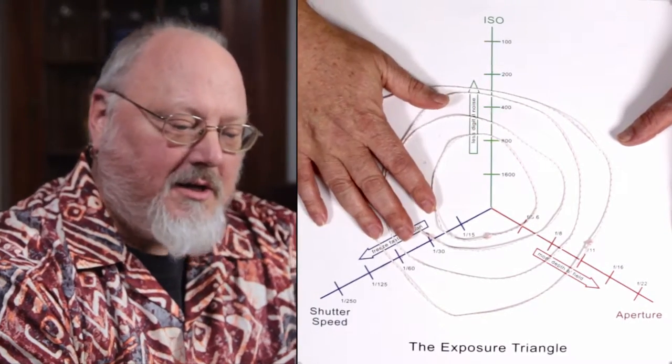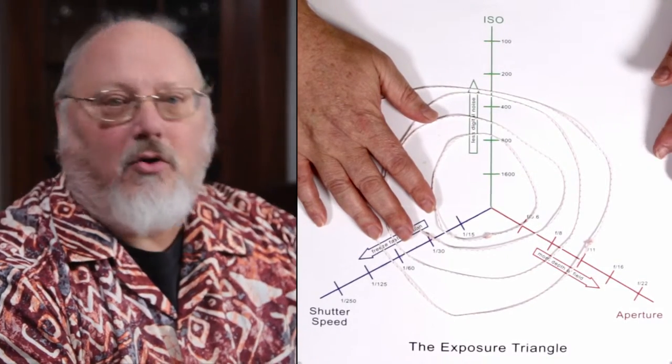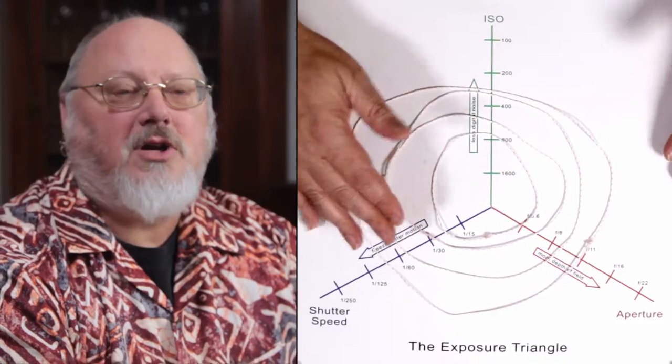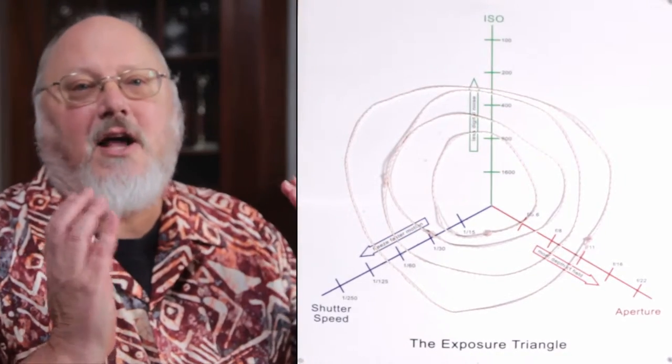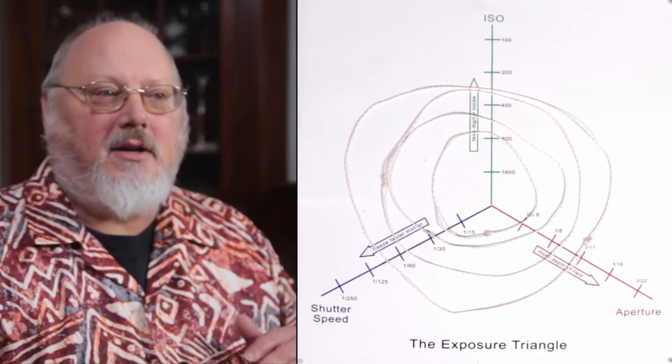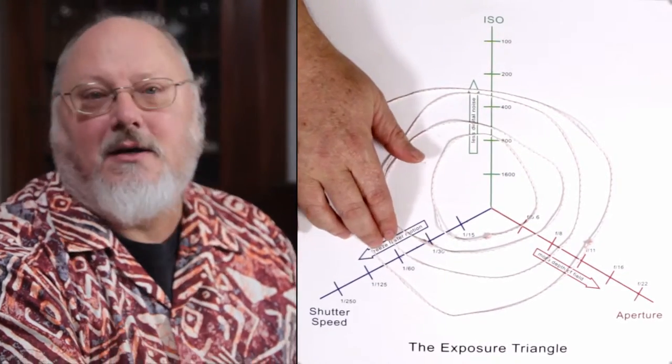So the next control is the shutter speed. The shutter speed is how long the shutter is open. The shutter is closed, and then when you press the shutter button, it opens the shutter, which allows light to come into the sensor. And how long that shutter is open is set in your shutter speed function.